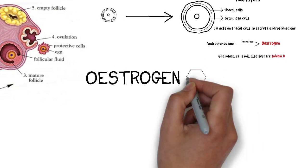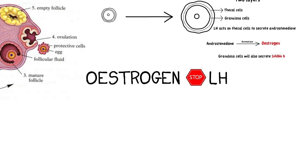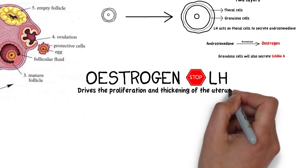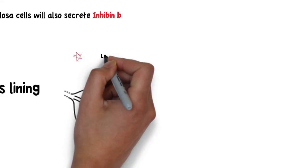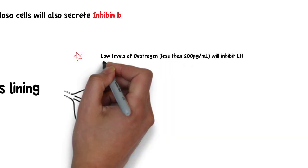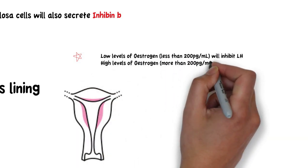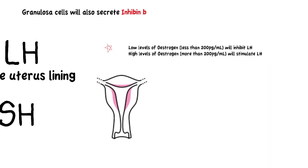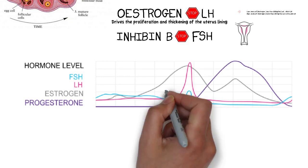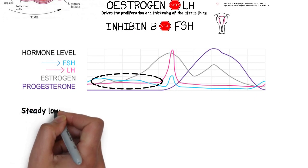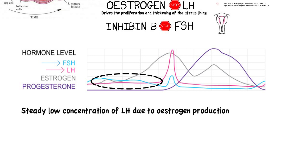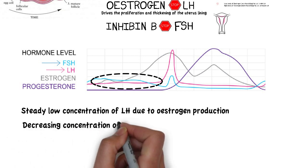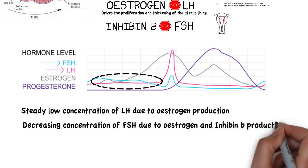At this stage, estrogen will inhibit LH secretion and drive the proliferation and thickening of the uterus lining, while inhibin-B will inhibit FSH secretion. It is important to note that low levels of estrogen will inhibit luteinizing hormone secretion, while high levels of estrogen will promote luteinizing hormone synthesis. Therefore, as shown in the graph, during the early follicular phase, there is a steady low concentration of LH and a decrease in concentration of FSH as the follicles mature and produce estrogen and inhibin-B.